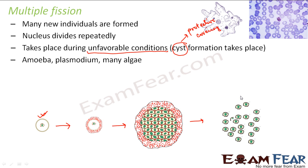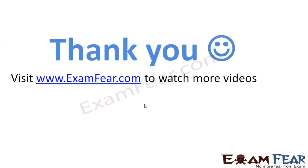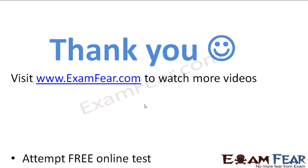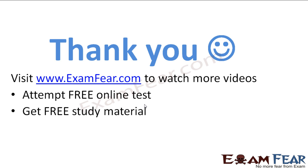To summarize the differences: in binary fission, two new individuals are formed; in multiple fission, many are formed. In binary fission, it occurs under favorable conditions; multiple fission occurs under unfavorable conditions. That covers fission. Please visit ExamFear.com to watch more videos, attempt free online tests, and get free study material.